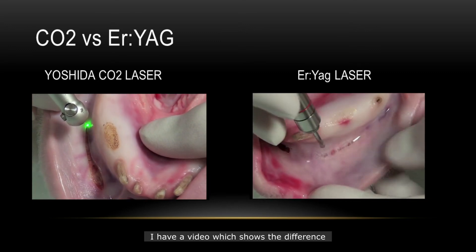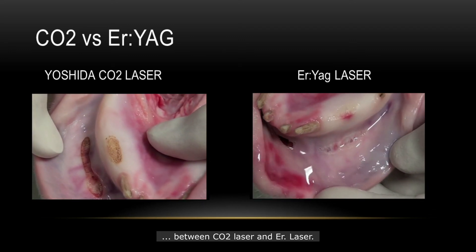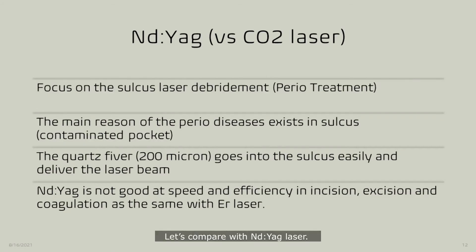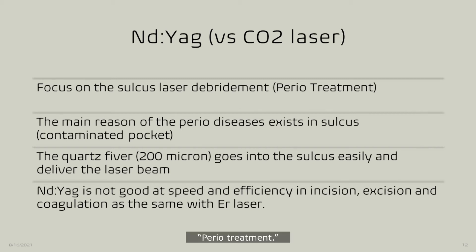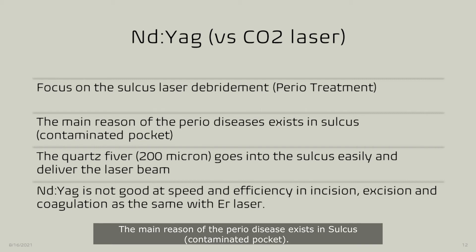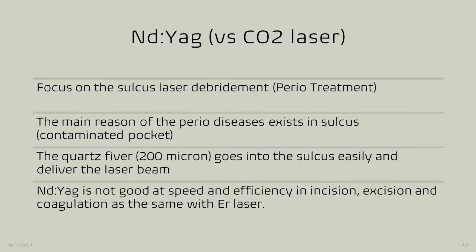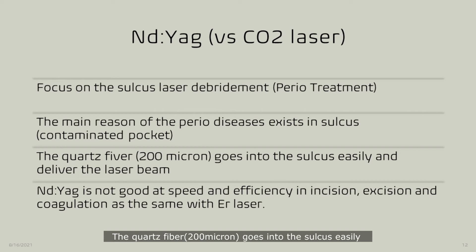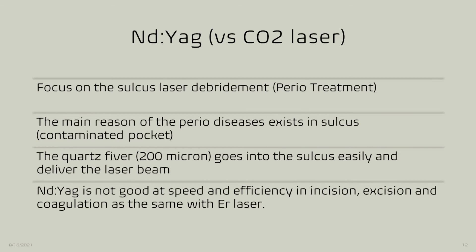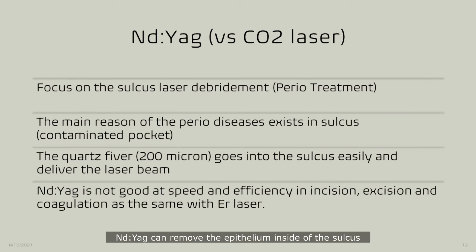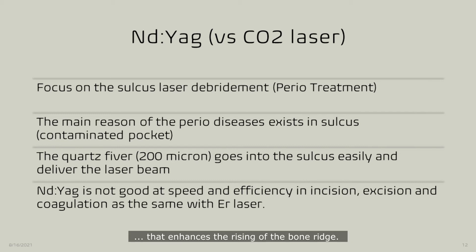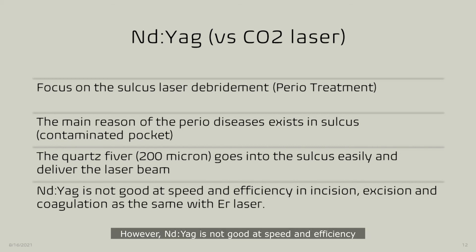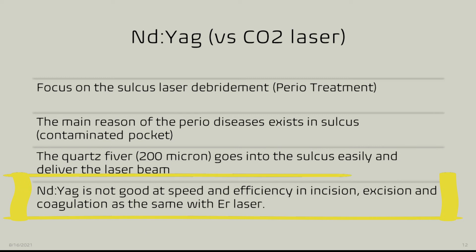I have a video showing the difference between CO2 laser and ER laser — I will attach the link below. Comparing with Nd:YAG laser: doctors who want to focus on laser debridement and periodontal treatment favor it. The main cause of periodontal disease exists in the contaminated crevicular pocket. A quartz fiber of 200 microns goes into the crevice easily and delivers the laser beam. Nd:YAG can remove the epithelium inside the crevice to promote reattachment of tissue to bone, enhancing bone regeneration. However, Nd:YAG is not efficient in incision, excision, and coagulation — the same as ER laser.